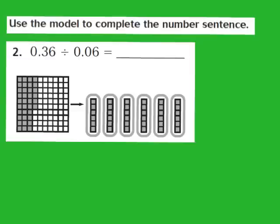Step number 2 says we have to divide or break apart the model into groups that are each the size of the divisor. In question 2, our divisor is 6 hundredths. So I'm going to come back to my model of 36 hundredths and begin to break it apart into groups of 6 hundredths. I have a group of 6 hundredths here, and another group of 6 hundredths here, and another group of 6 hundredths here.